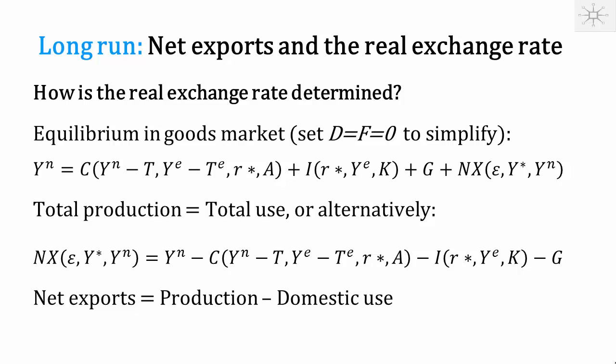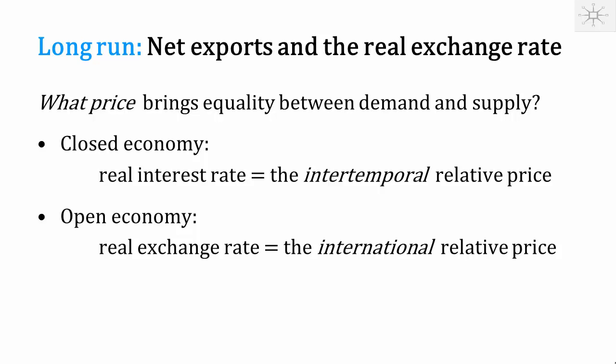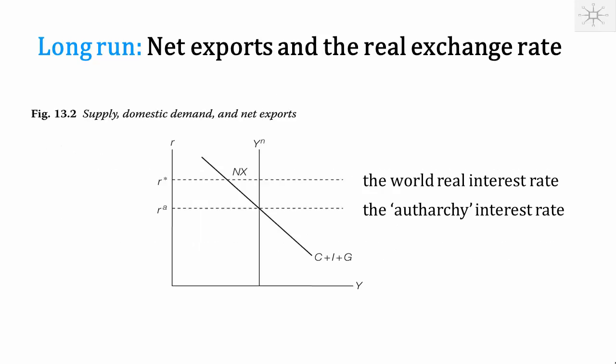If we examine these equations, production is given at the natural level, taxes are exogenous, assets are what they are, the real interest rate is determined in the world economy, and the capital stock is inherited from the past. There is only one thing that can bring about equilibrium here, and that is the real exchange rate. So the real exchange rate is the key relative price that brings about equality between demand and supply in the open economy — it is the international relative price, just as the real interest rate is the intertemporal relative price in the closed economy.